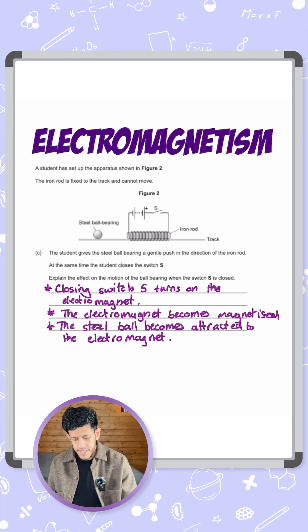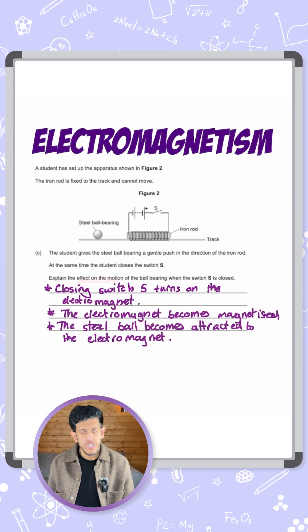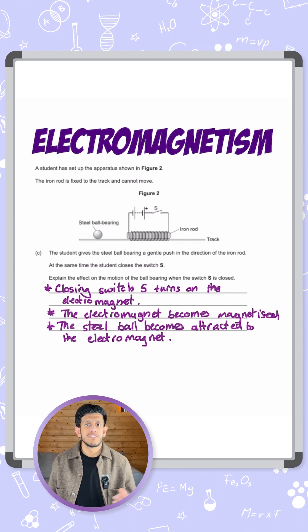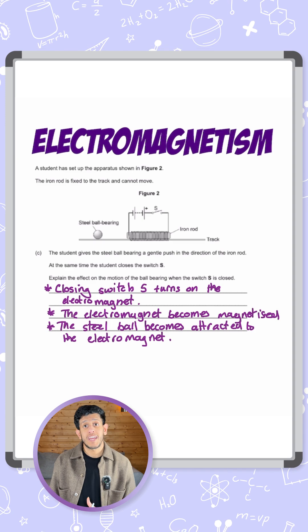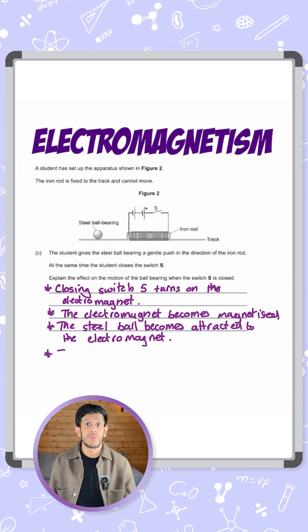Now lastly, the question actually says explain the effect on the motion. So because it becomes attracted, its motion means it moves faster towards the electromagnet. So we're going to say for the last mark the ball is attracted to the electromagnet so it accelerates.